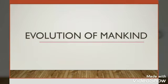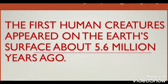Now I will read the first two paragraphs of this chapter, after which I will explain them. Human evolution is the lengthy process of change. The change from ape-like ancestors to modern human beings is called the evolution of mankind. This evolution took place over a period of approximately 6 million years. It is said that the first human-like creatures appeared on the earth's surface about 5.6 million years ago (MYA). One of the earliest defining human traits — the ability to walk on two legs — evolved over 4 million years ago. Other important human characteristics, such as a large and complex brain, the ability to make and use tools, and the capacity for language, developed more recently.